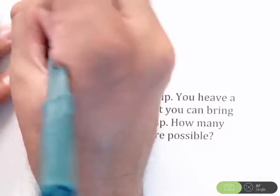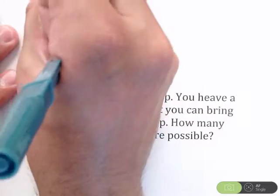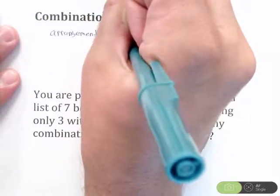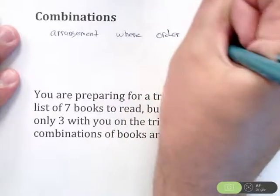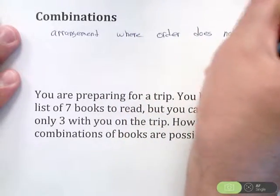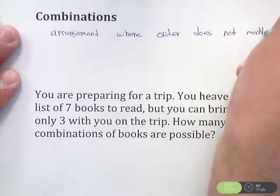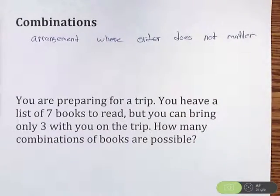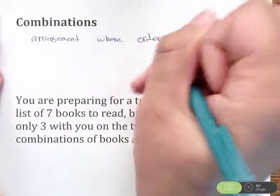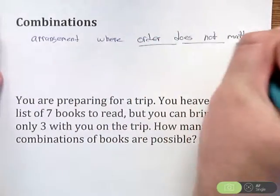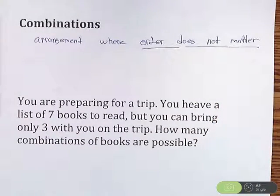Combinations is an arrangement where order does not matter. So how this differs from permutations, permutations order does matter, combinations is the arrangement where the order does not matter. That's the difference between the two. Permutations, order matters, combinations, order does not matter.